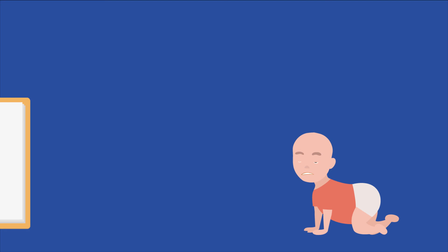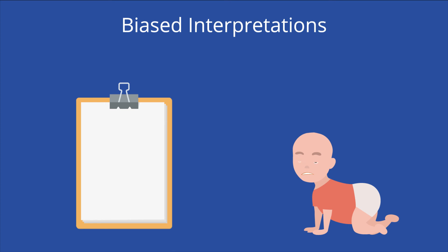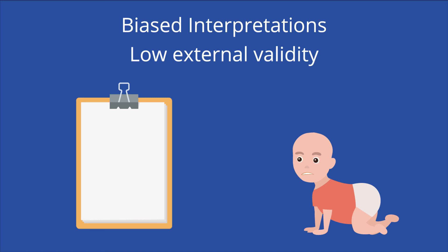Furthermore, the researchers didn't thoroughly explain how they collected their data, which makes the experiment difficult to replicate. There are still photographs of Little Albert's reaction to the stimuli, but it seems the researchers mostly relied on their subjective personal observations. Their interpretations of Little Albert's neutral and pure reactions can be heavily biased, so it's difficult to assess whether their data is reliable. On top of not having objective data collection methods, the experiment has very low external validity because it isn't generalizable to others.